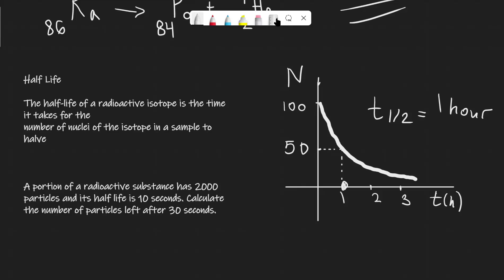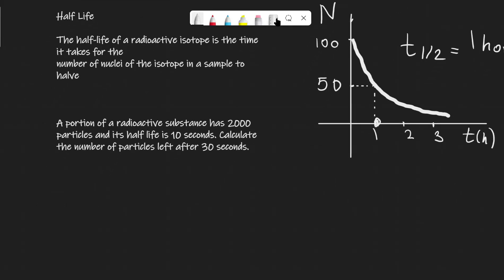Now we can also use the half-life to do some calculations. For instance, we have a portion of a radioactive substance that has 2000 particles and its half-life is around 10 seconds. Calculate the number of particles left after 30 seconds. Okay, so every half-life essentially the number of particles halves. So after 10 seconds we're going to have 2000 times a half.